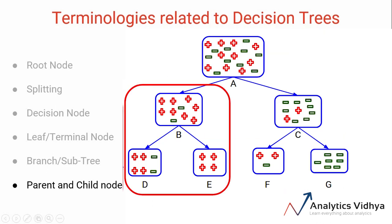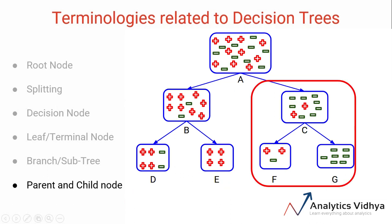Similarly, in this, B is the parent node and D and E will be the child nodes. And of course you must have guessed this by now, C will be the parent node and F and G will be the child nodes.